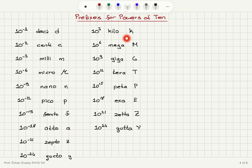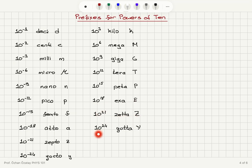For larger quantities: 10³ is kilo, 10⁶ is mega (used in megabytes in computer language), 10⁹ is giga (gigabytes), 10¹² is tera (terabytes), 10¹⁵ is peta (petabytes), 10¹⁸ is exa (exabytes, which are being used now), 10²¹ is zeta, and 10²⁴ is yota. We need to be aware of these prefixes and how we name them.